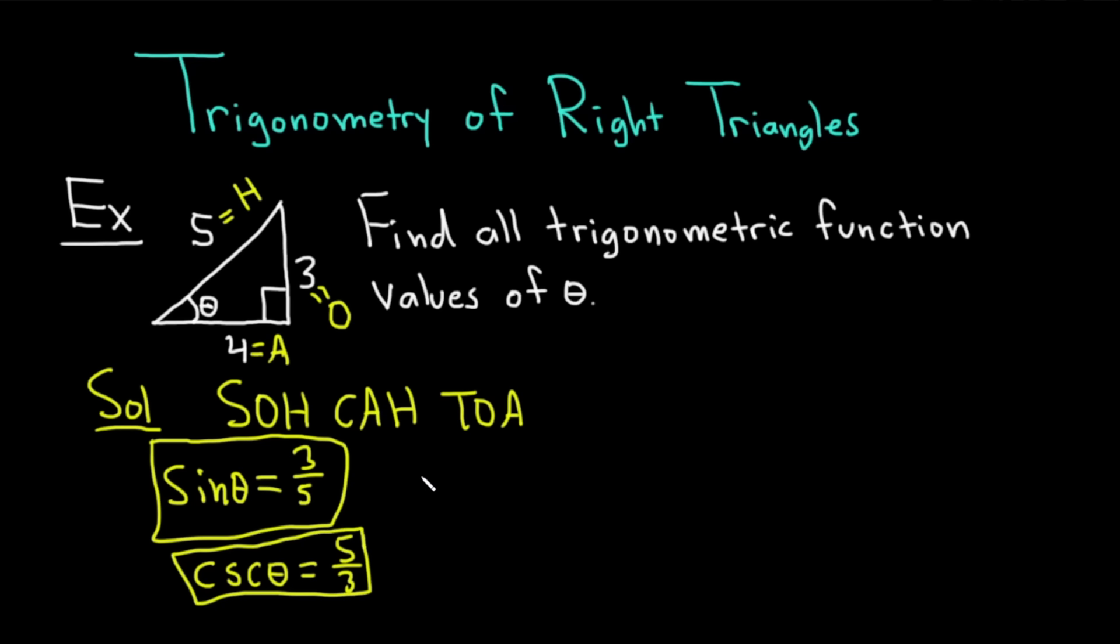Let's do cosine now. Cosine of theta is adjacent over hypotenuse, so it'll be 4 over 5. 4 over 5 adjacent over hypotenuse, and then the reciprocal is secant, so you just flip the fraction, 5 over 4. So two more answers here.